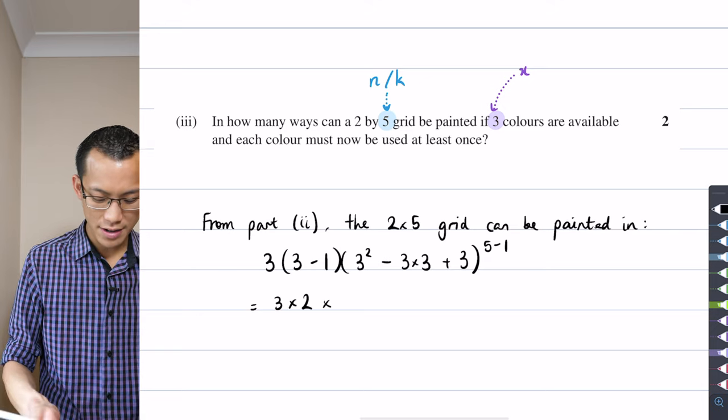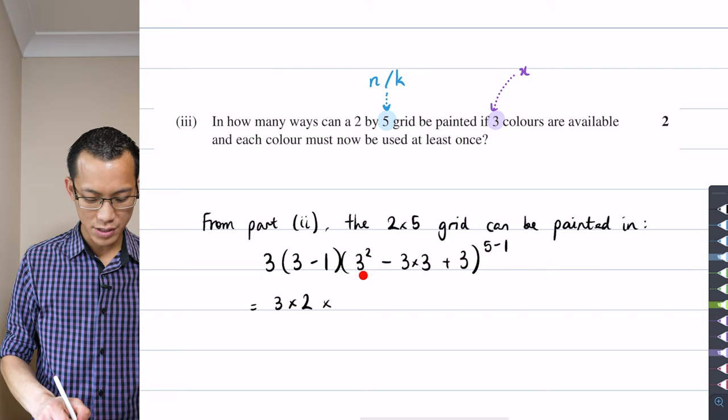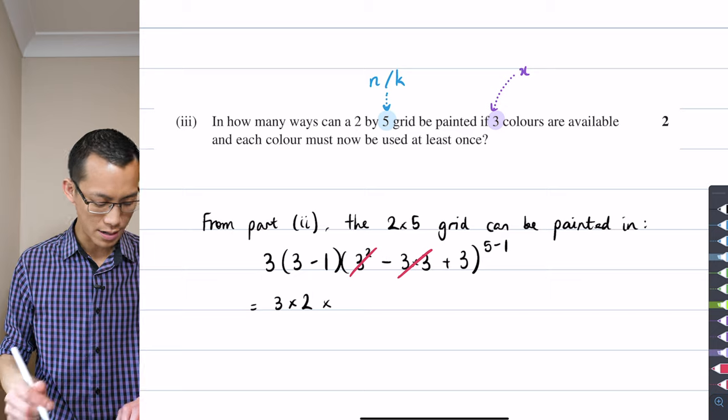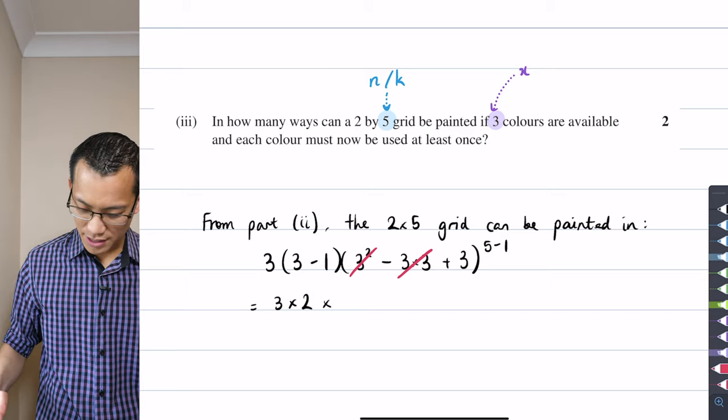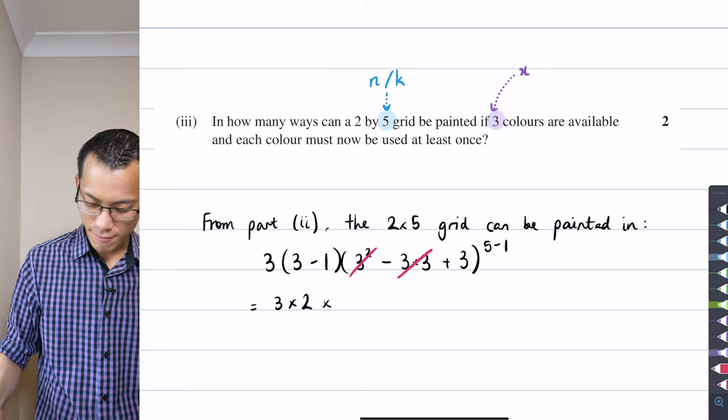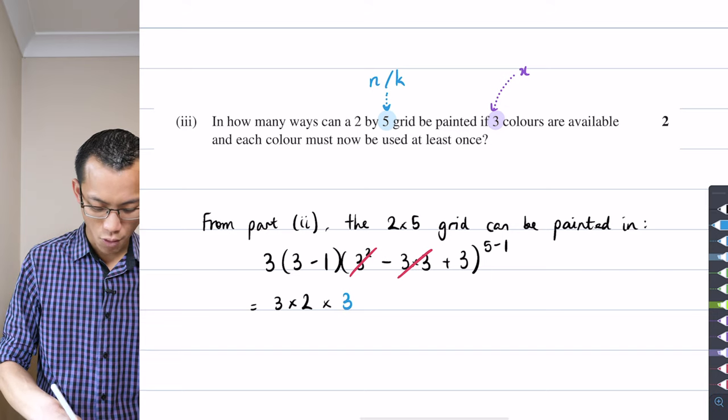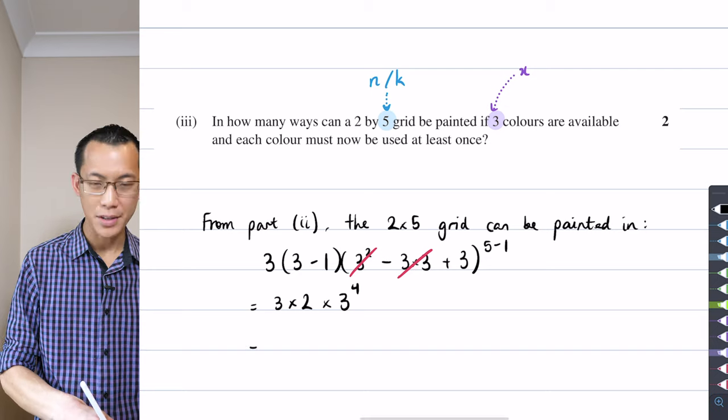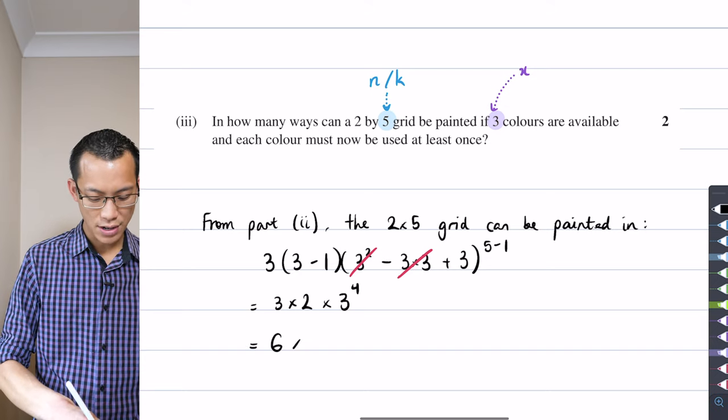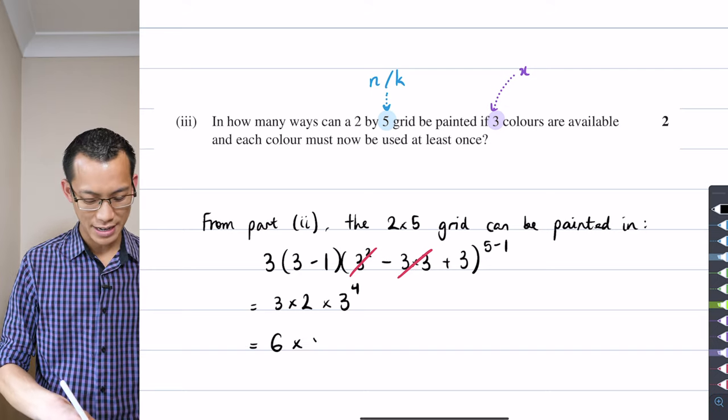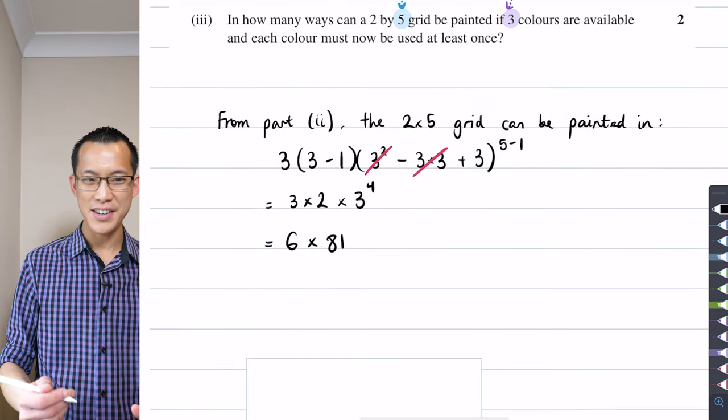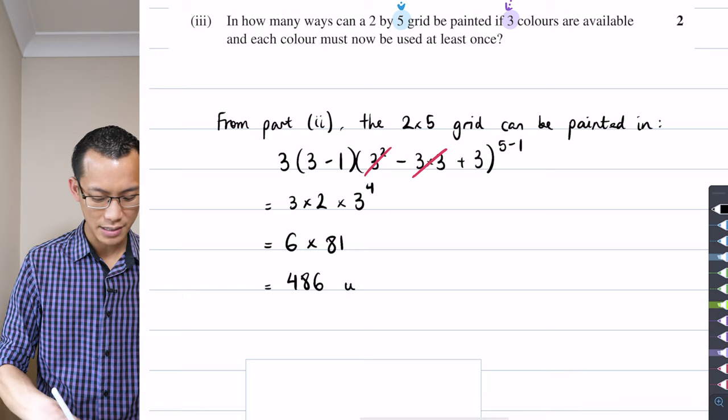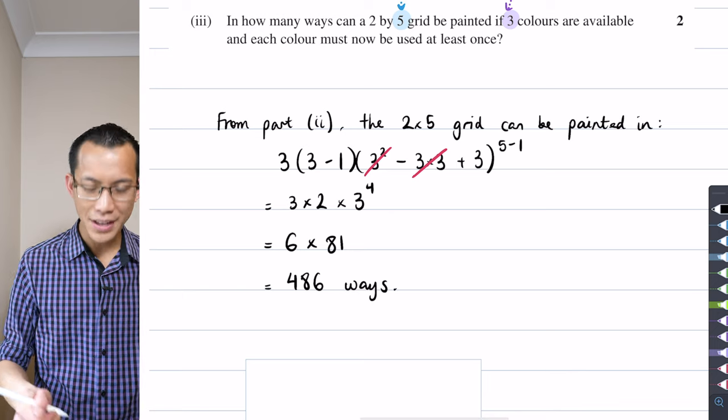Okay so you're like gross there's some messy numbers here but it's actually not that bad right you're going to get 3 times 2 out the front this 3² and this 3 times 3 they're just going to cancel with each other so that's kind of nice and then you can see I'm going to get a 3 raised to the power of 4. So you got 6 times 3 to the power of 4 some of you might know is actually 81 and you're like I don't even need a calculator for this at least I hope you don't that's 486 ways.